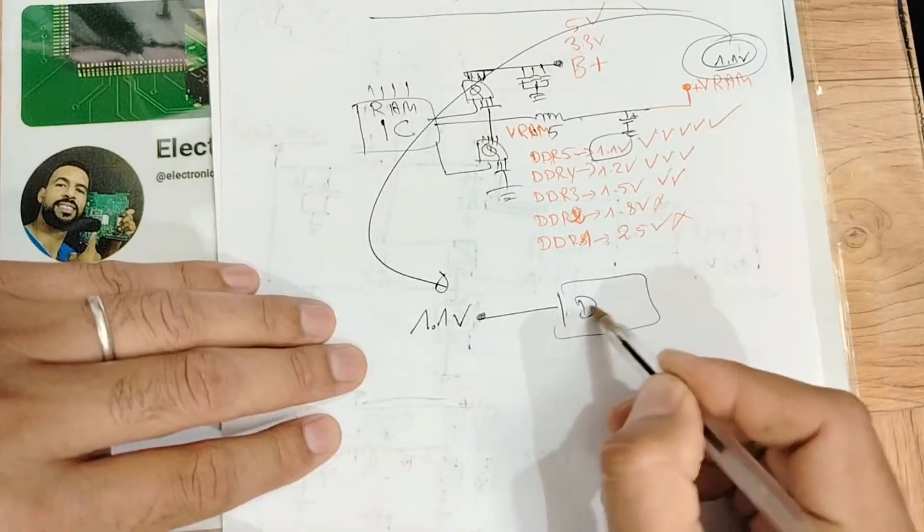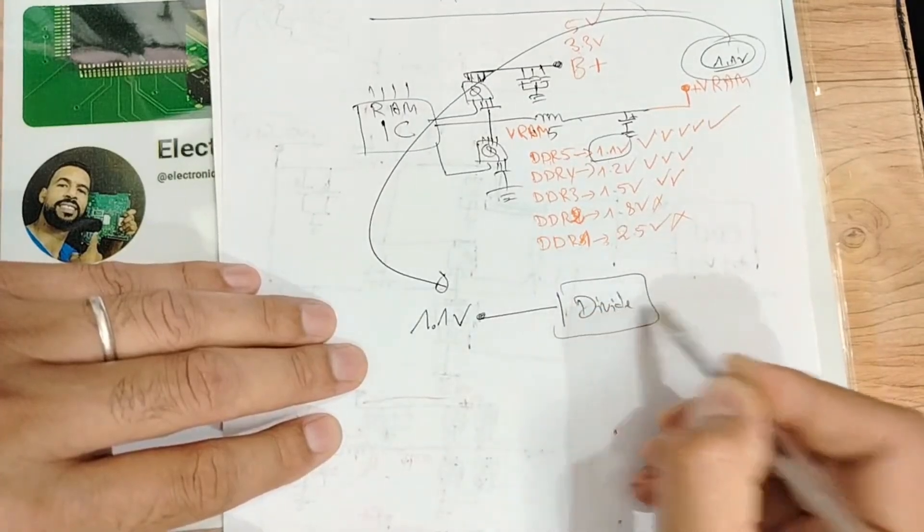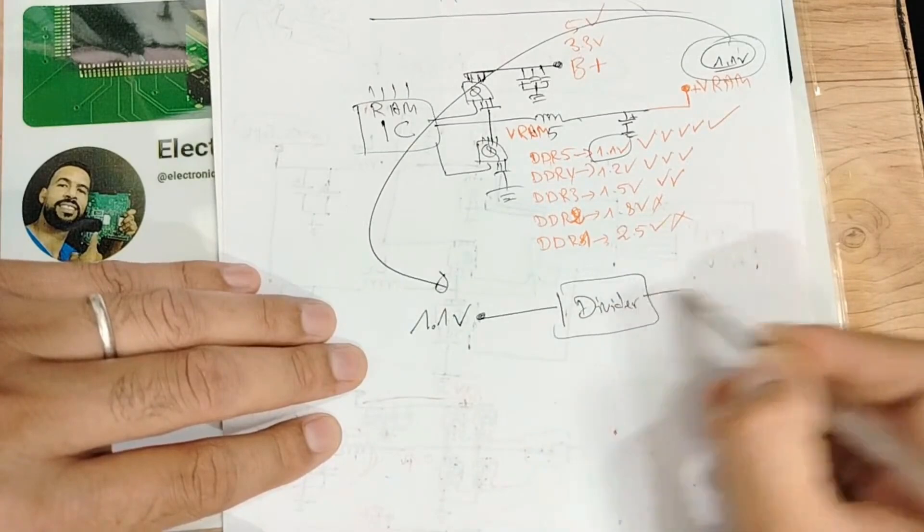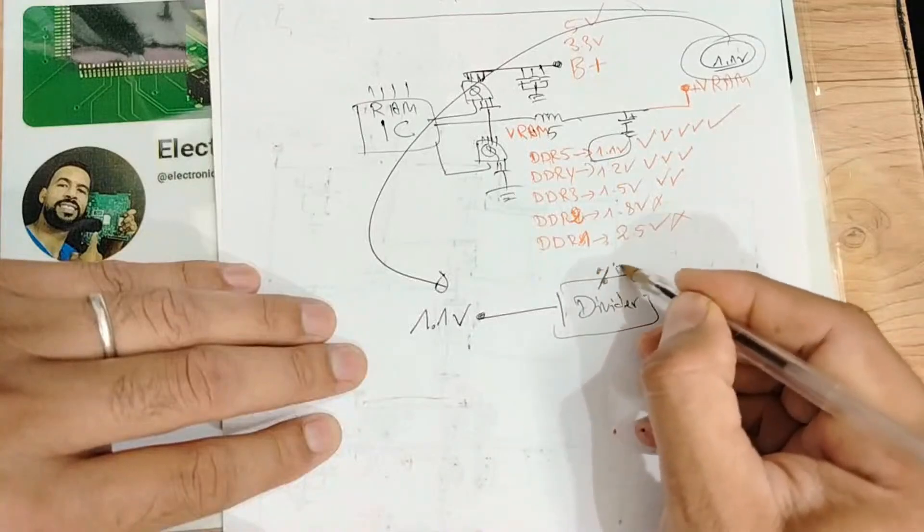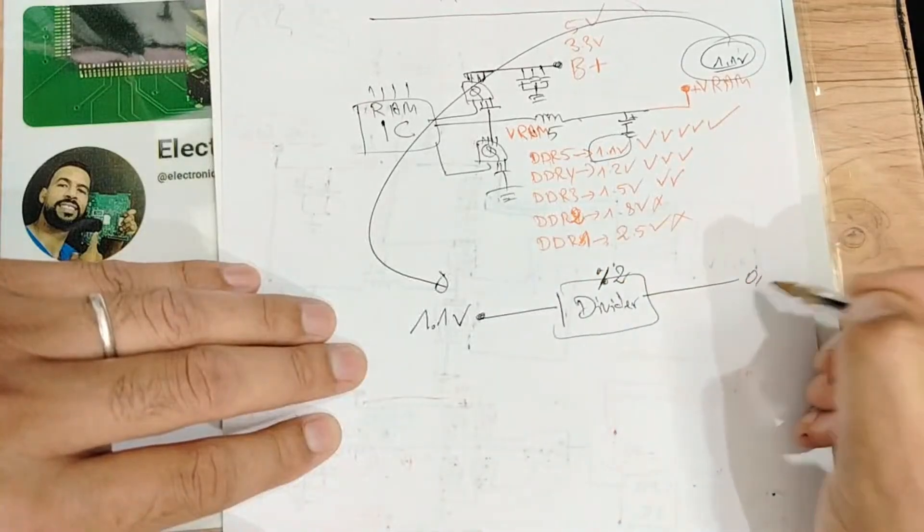In order to get what? To get the half - divider divided by two - and then we will get 0.55 volts for VTT.